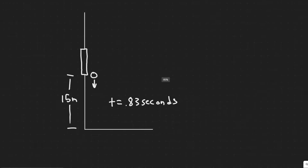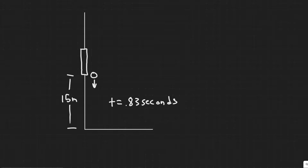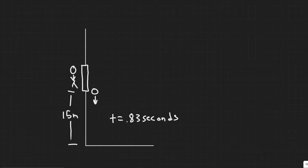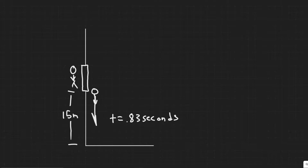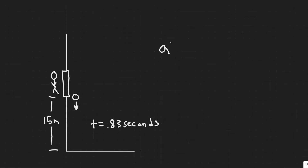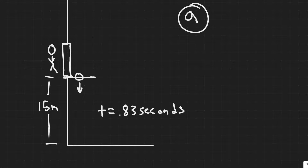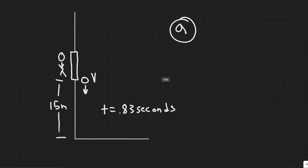The first thing we want to do is draw what's going on. Water balloons are being dropped from above Roger, so imagine this is Roger's window. They fall past his window, which is 15 meters above the sidewalk. The time it takes from the window to the ground is 0.83 seconds. We start with part a, finding how fast the balloons are traveling when they pass by Roger's window — essentially finding the velocity right at that point.